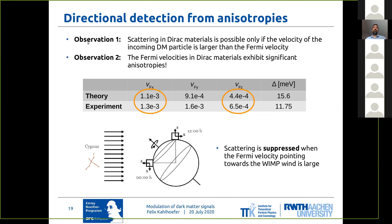The key observation is that scattering in a Dirac material is possible only if the velocity of the incoming dark matter particle is larger than the Fermi velocity in the direction of scattering. And this is important because the Fermi velocities in Dirac materials often exhibit very significant anisotropies. In the example of zirconium telluride, the Fermi velocity in the x direction is of the order of 10^{-3} and it's about a factor of 2 smaller in the z direction.